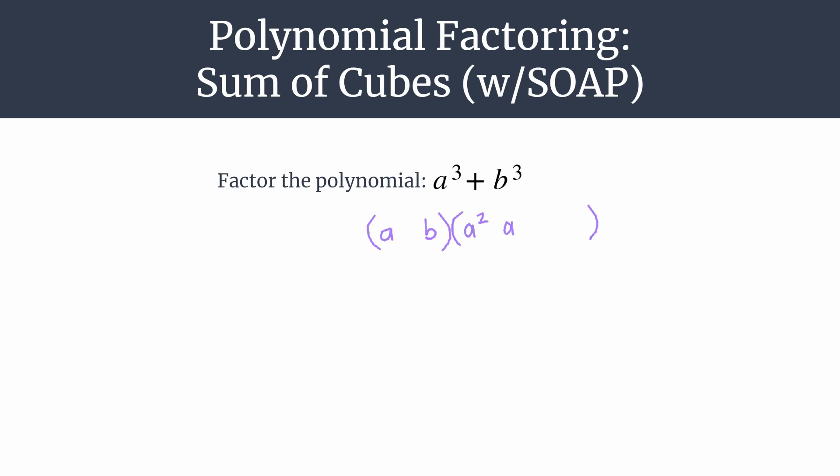It'll be a², ab, b². And this trinomial will never be able to be factored any further.